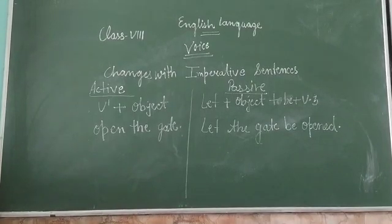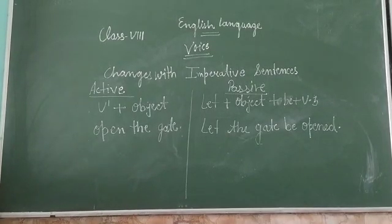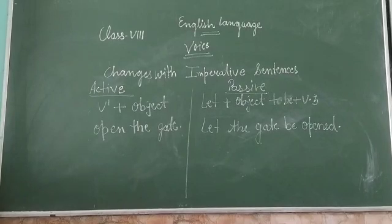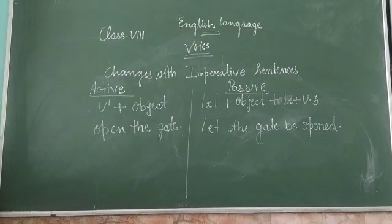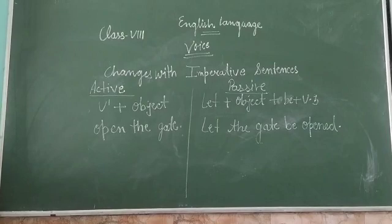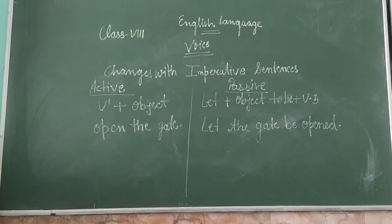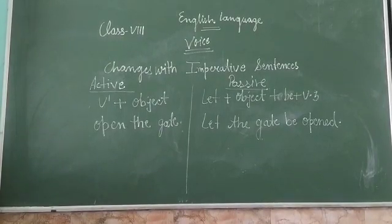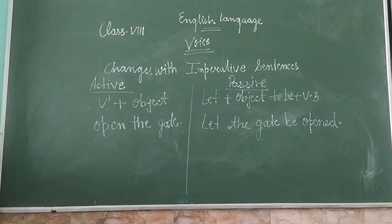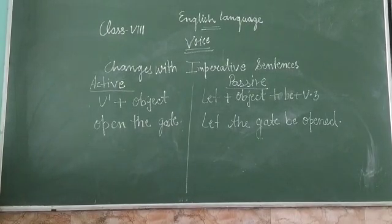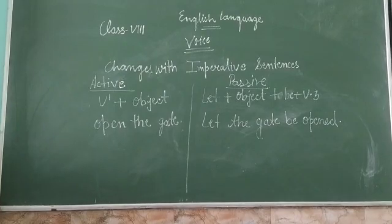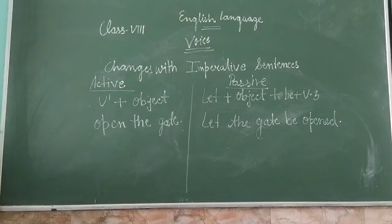For example, 'I ought to take the examination' becomes 'The examination ought to be taken by me' in the passive form. If our sentence uses infinitives like 'have to' or 'has to,' we use 'to be + V3.' For instance, 'He used to postpone his work' becomes 'His work used to be postponed by him.'